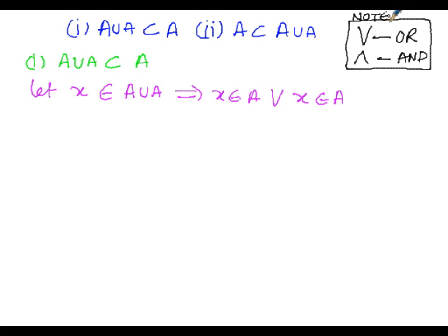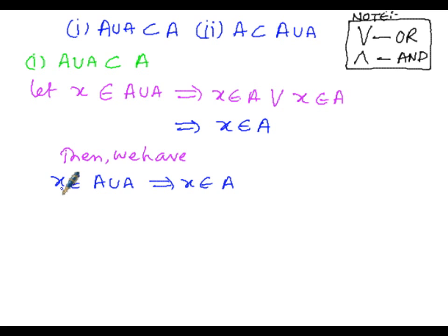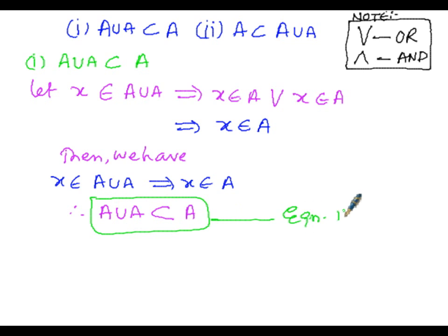So x belongs to A or x belongs to A, which means we can write it as simply x belongs to A. Therefore, x belonging to A union A implies x is also present in A. The elements belonging to A union A are also present in A, so A union A is a subset of A. This is equation number 1.